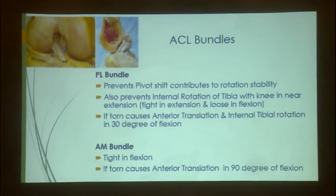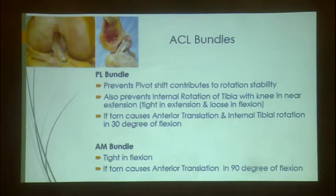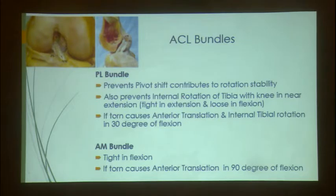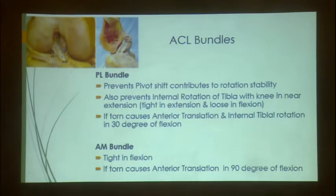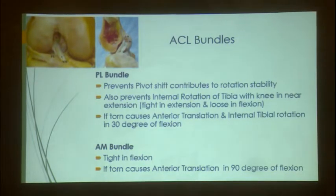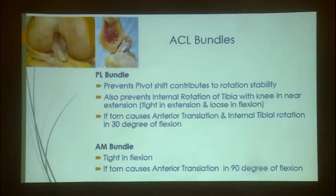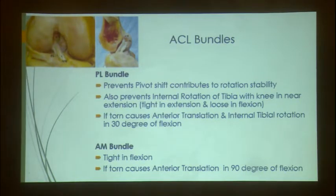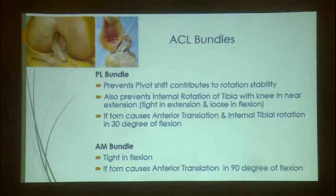Whether you believe in the anatomic double bundle or not is a different story, but functionally there are two distinct bundles. The posterolateral (PL) bundle prevents the pivot shift and contributes to rotational stability — it prevents internal rotation of the tibia in near extension. It is tight in extension and loose in flexion. If torn, it causes not only anterior translation but internal rotation of the tibia at 30 degrees of flexion. The AM bundle is tight in flexion; if torn, it causes anterior translation at 90 degrees. The PL bundle is more important, which is why most surgeons fix the graft in extension.